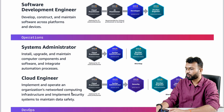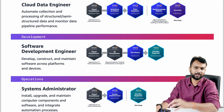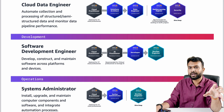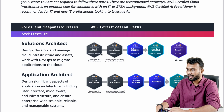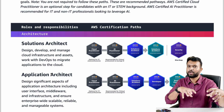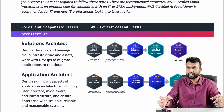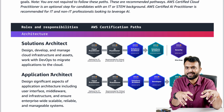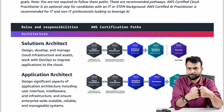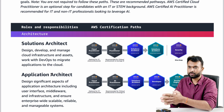A test engineer has to follow the path of architecture or development, because if your development team is developing components like Lambda functions, SQS, or SNS, you as a tester should know what they are developing — because end of the day you need to test it. Architects have a broader picture of how the end-to-end flow works, so developers or testers can follow the architect path.